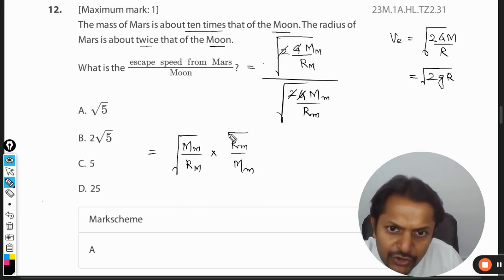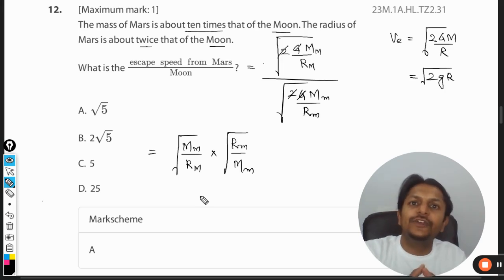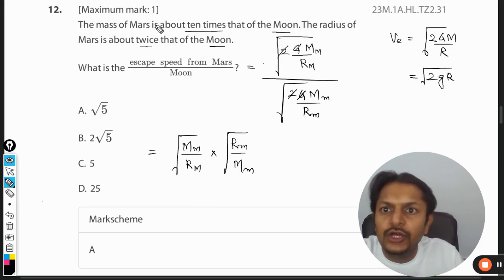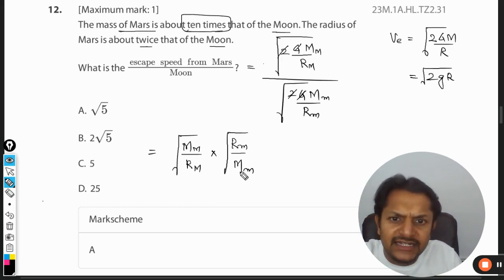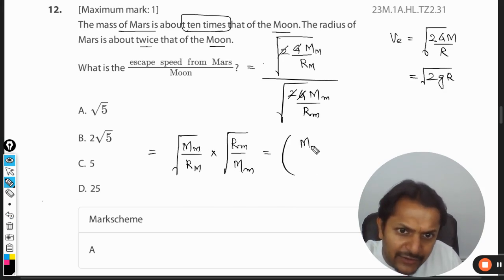This will be our new equation. Now we can substitute the values that are given to you. The mass of Mars is about 10 times the mass of the Moon, so mass of Mars is 10 times this, so I can just cancel it and it will become 10. Let me club these values: mass of Mars divided by mass of Moon, into radius of Moon divided by radius of Mars, and overall the power will be half.